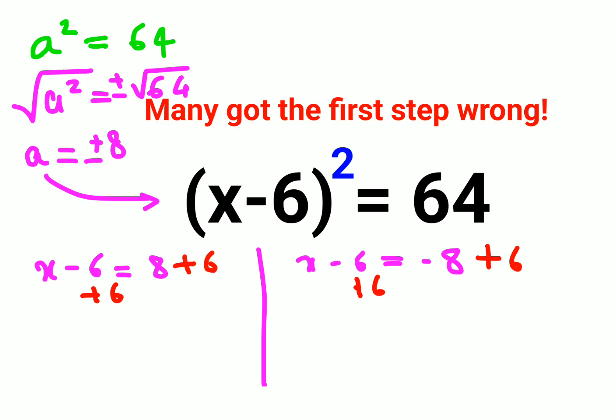So we have x minus six plus six that gets you zero, so x plus zero gets you just x. Eight plus six gets you 14, and here also we'll just get an x, and this is minus eight plus six, so that gets you minus two.